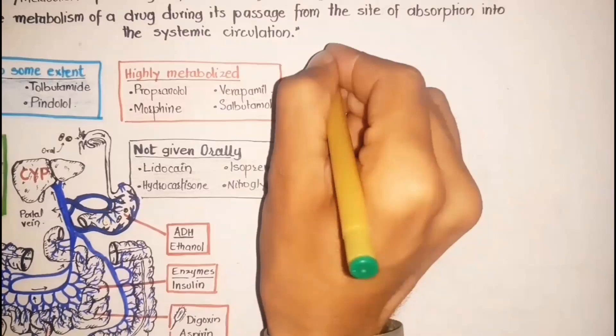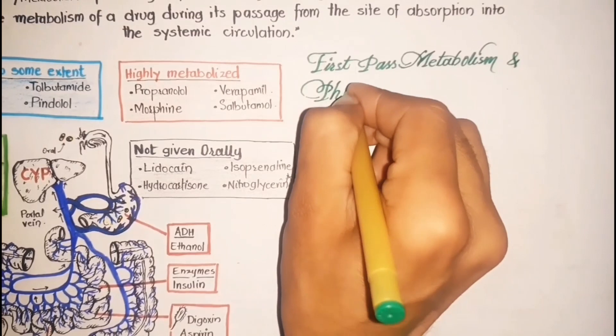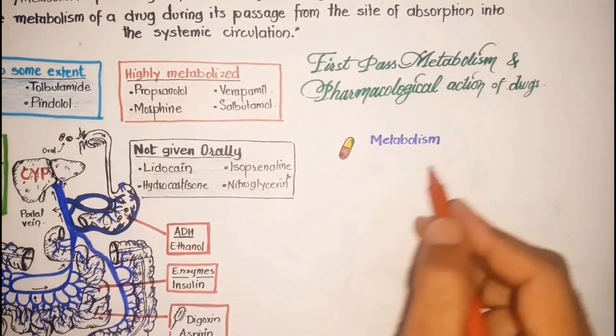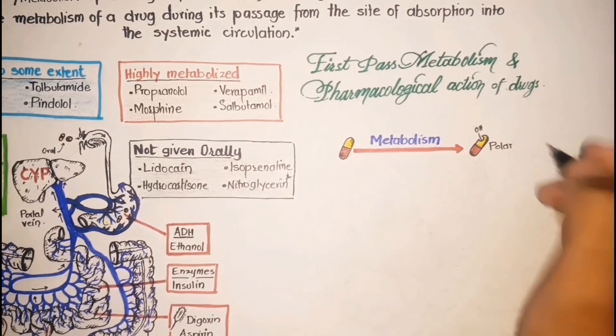Now, how does the first pass metabolism affect the drug pharmacological action? So if we simply think of metabolism, it is a chemical alteration in the drug molecule which usually leads to a polar compound.